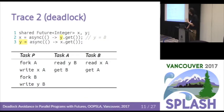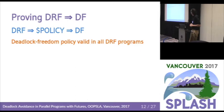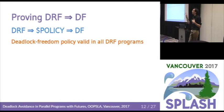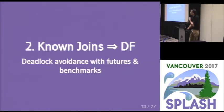This is the running example we're going to be using. What we did was prove that data race freedom implies deadlock freedom, and we achieved that by creating a policy such that deadlock freedom implies this policy and the policy enjoys deadlock freedom.